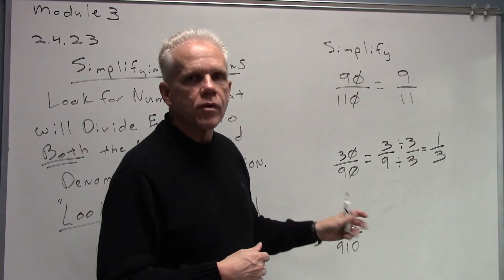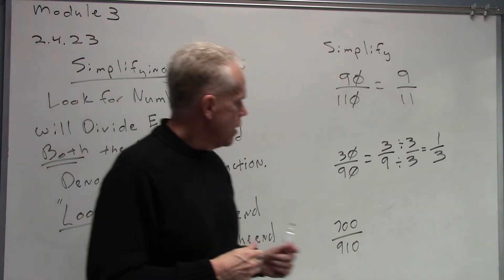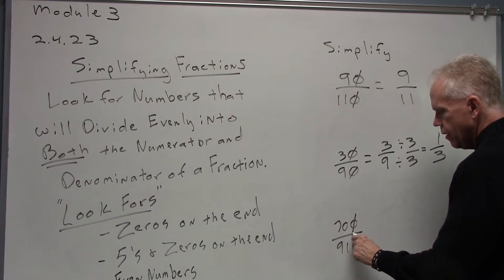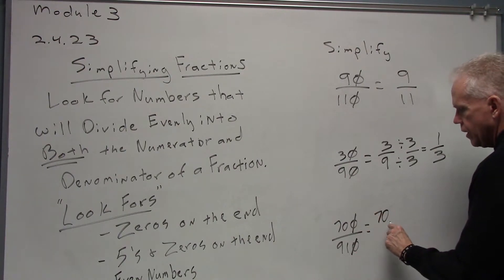Let's take a quick look at this last one, a little more difficult. 700 over 910. My first order of business is to notice the zeros on the end, this zero with this zero, and knock this right on down to 70 over 91.